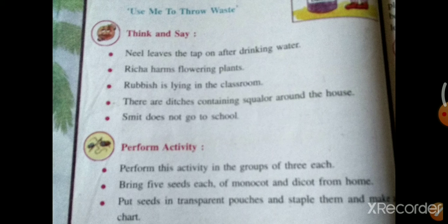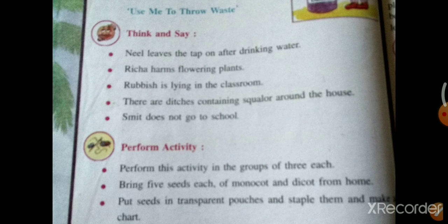Now we need to perform an activity in groups of three. Bring five seeds each of monocot and dicot from home. We have already studied monocot and dicot seeds. Place the seeds in a transparent pouch, staple them, and make a chart. Then observe which one germinated first and write the names of the seeds on the chart. Do this activity as a group and then we will discuss it.